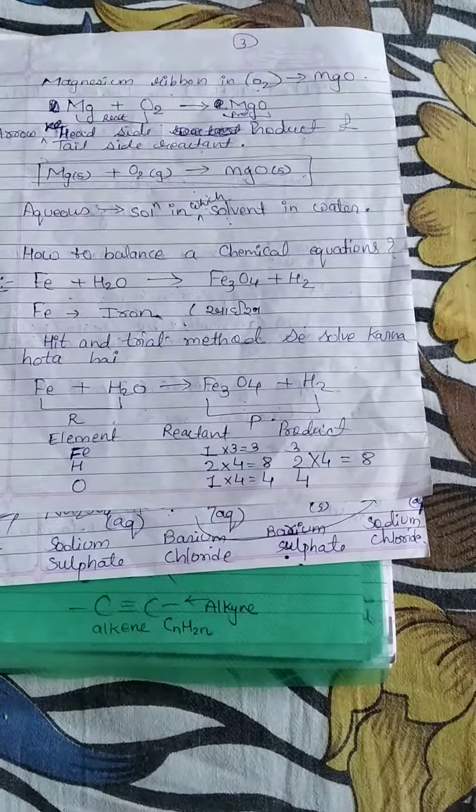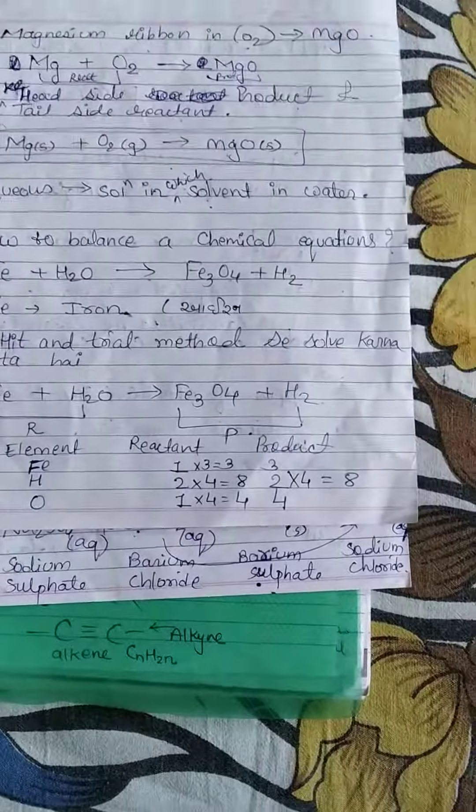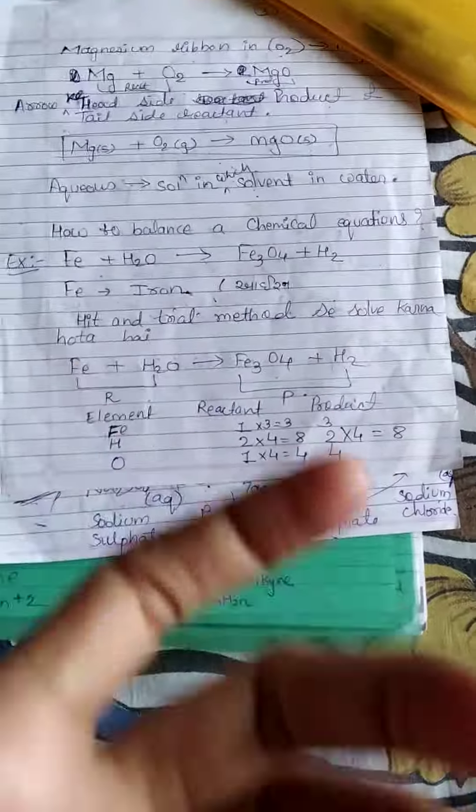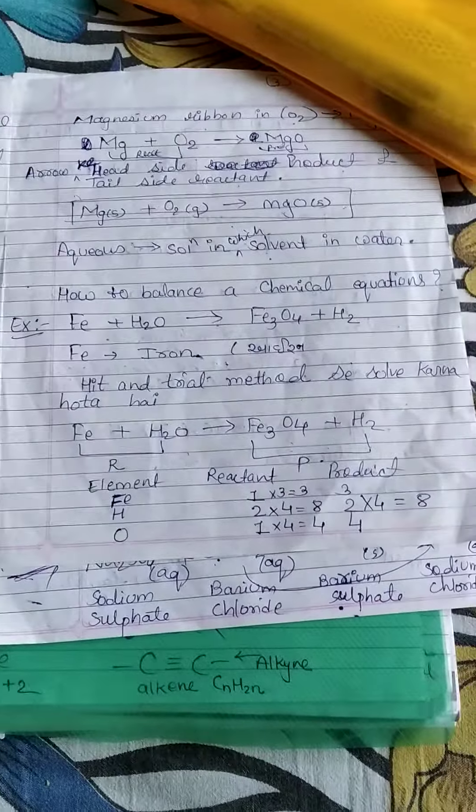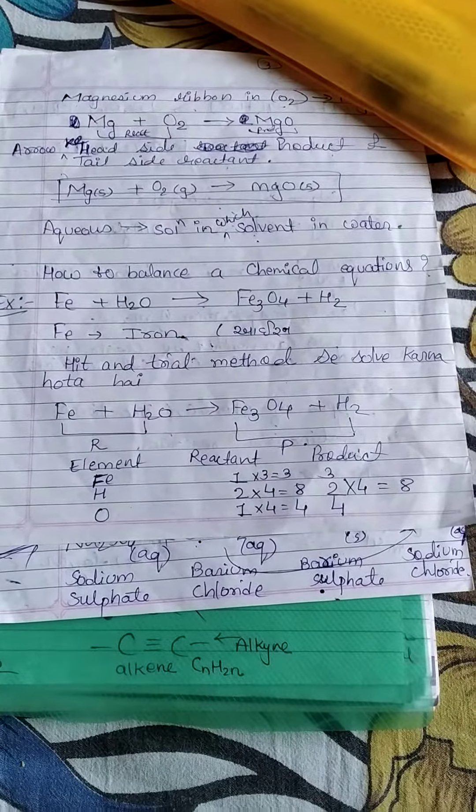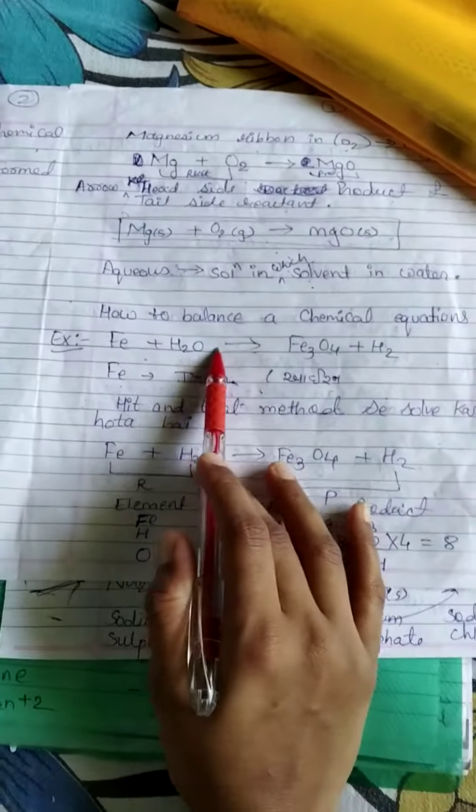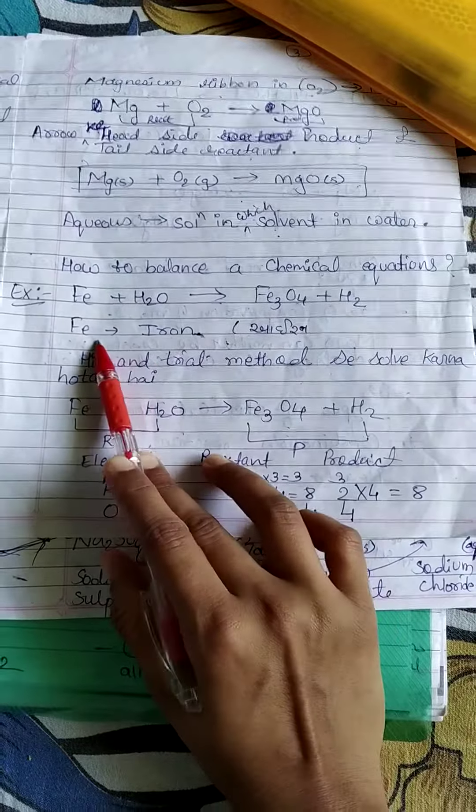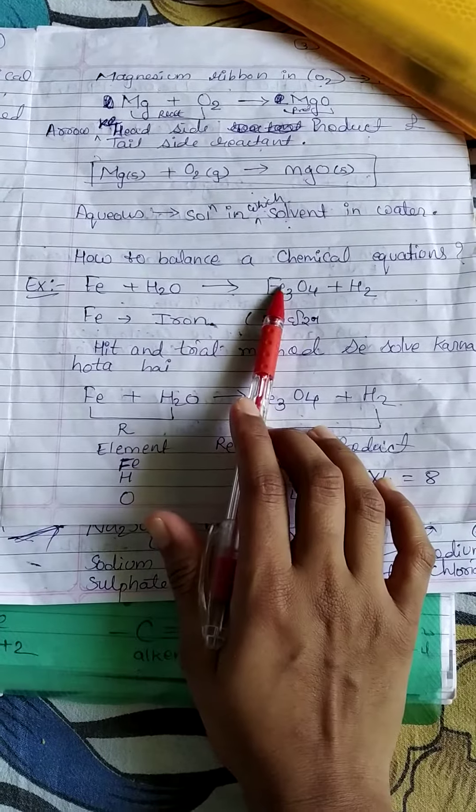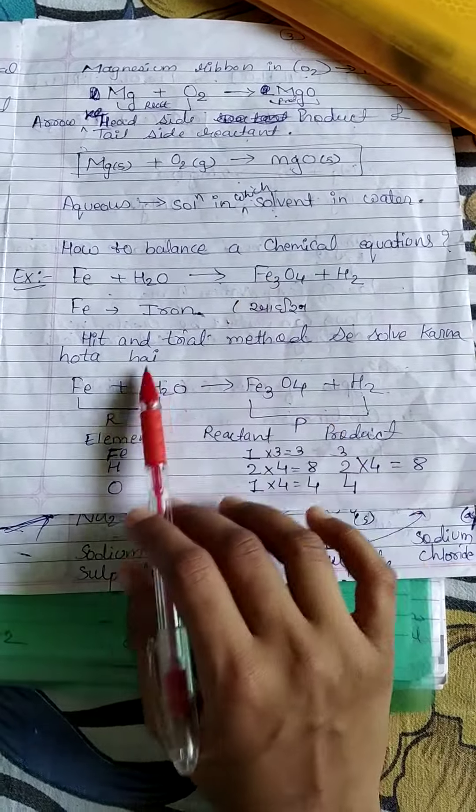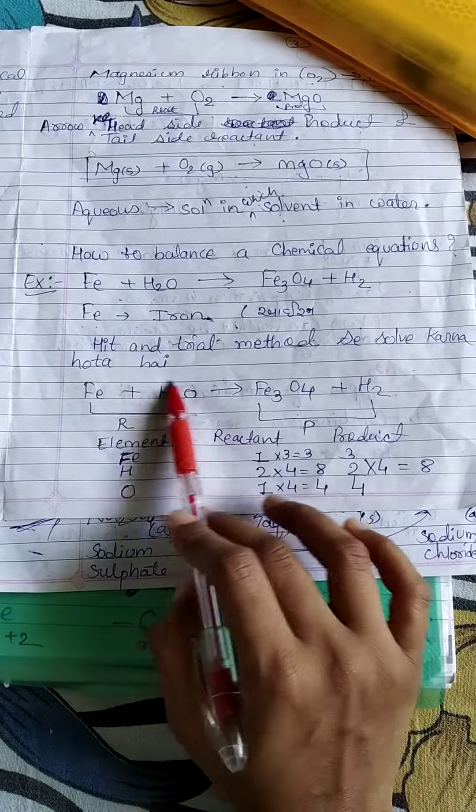Hello friends, as last time we read about chemical reaction and equation, physical state, what is reactant, what is product. Today we are going to study how to balance a chemical equation. Let's see Fe + H2O gives Fe3O4 + H2. To balance a chemical reaction, we have to use hit and trial method.